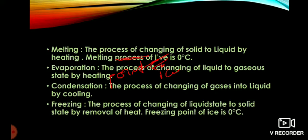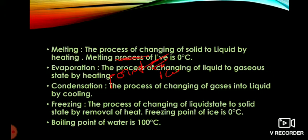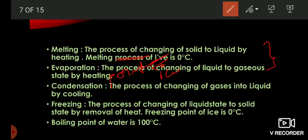Next, freezing — the process of changing of liquid state to solid state by removal of heat. The freezing point of ice is 0 degrees centigrade. Today we have learned the different state changes: melting, evaporation, condensation, and freezing. Melting and evaporation are done by adding heat, whereas condensation and freezing happen by the cooling process.